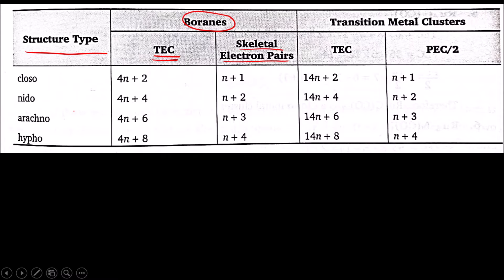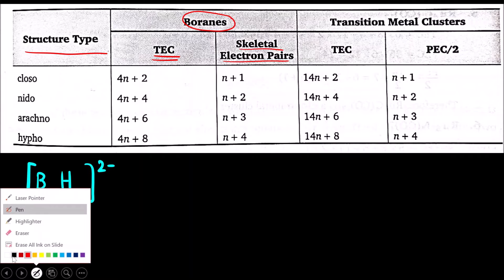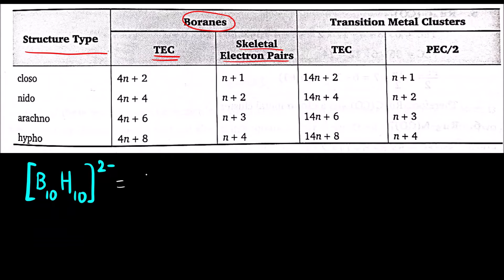We have to calculate the total valence electrons. Boron, 10 borons into three valence electrons plus 10 hydrogens, it is 1 plus there are 2 electrons. We add 2 and then total it is 30 plus 10 plus 2. 40 plus 2, 42.